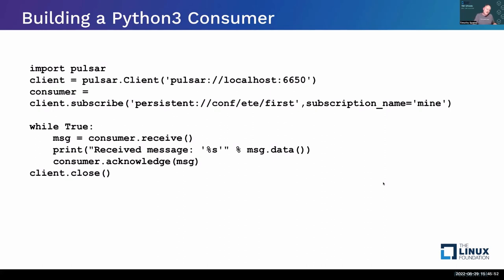To get data back, connect to the client and create a consumer with a subscription name. The server manages where you are in the topic — you'll never lose a message. When you receive a message, it stays in the system until you acknowledge it. Once acknowledged, it's acknowledged on the server. You can also negatively acknowledge it or just ignore it — in which case it stays around, potentially forever, which is how you get petabytes of data.